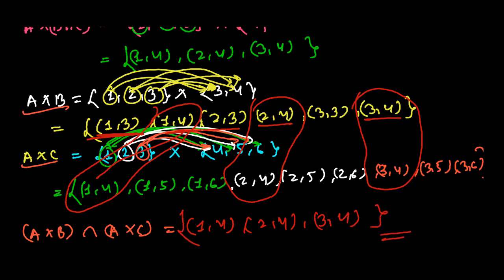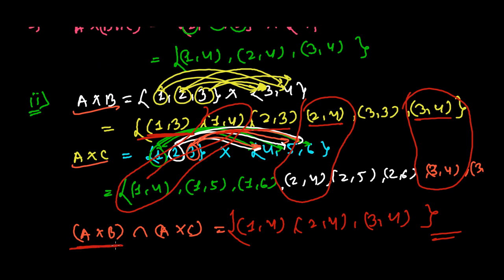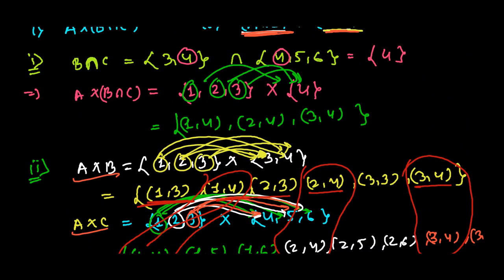To summarize: we first found the Cartesian product of A and B, then the Cartesian product of A and C, and finally found the common part between the two sets — the intersection of A cross B and A cross C. I hope you understand how to solve this.